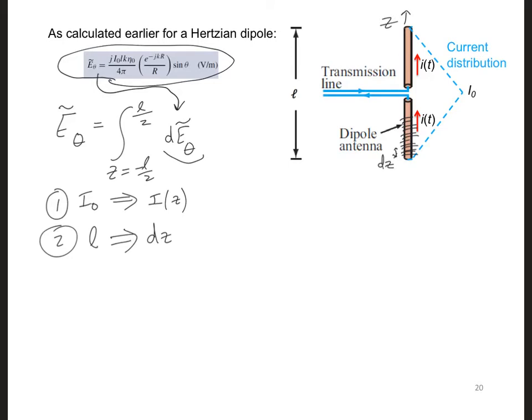Then each infinitesimally short dipole radiates into the far field the following electric field. For dE_theta, we have j k η_0 over 4π, times I(z), times dz, times e to the minus j k r prime over r prime, times sine θ_r prime.